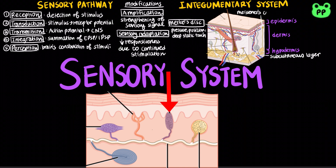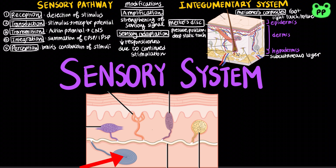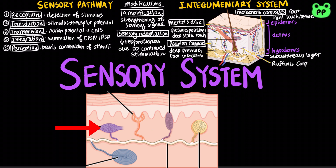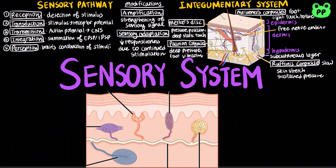Meissner's corpuscles are rapidly adapting receptors that are sensitive to light touches and texture, such as in the fingers and lips, whereas Pacinian corpuscles are responsible for deep pressure and fast vibrations. Ruffini's corpuscle is a slow adapting receptor that is sensitive to skin stretch and sustained pressure. Lastly, free nerve endings detect pain.